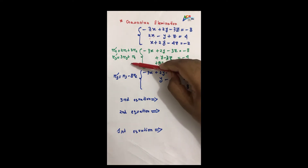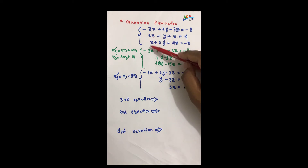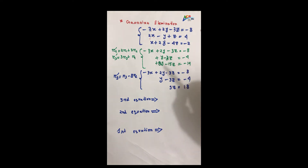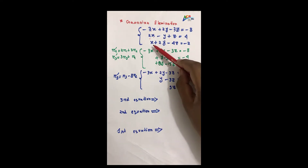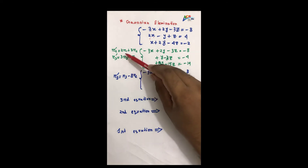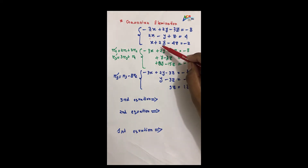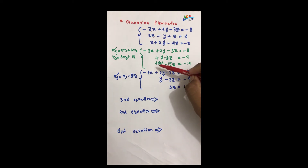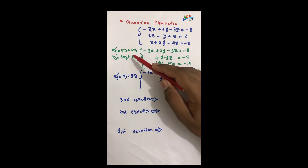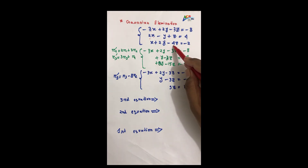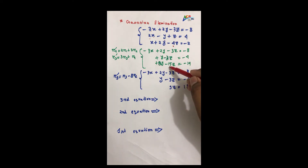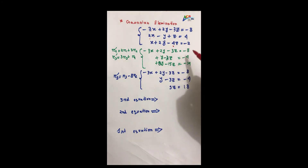3 into r1 minus 3x is 0. Then 3 into r3 gives 3 into 2y, which is 6y, plus r1 plus 2y — so 6 plus 2y is 0. For z: 3 into r3 gives 3 into 4z, which is minus 12z, plus r1 minus 12z, minus 3z gives minus 15z. And 3 into minus 2 gives minus 6, plus r1 minus 6, plus minus 8 gives minus 14.